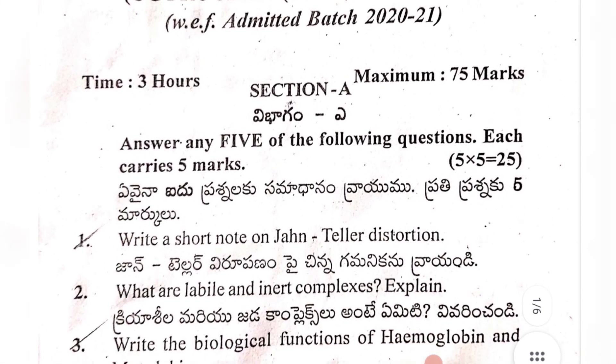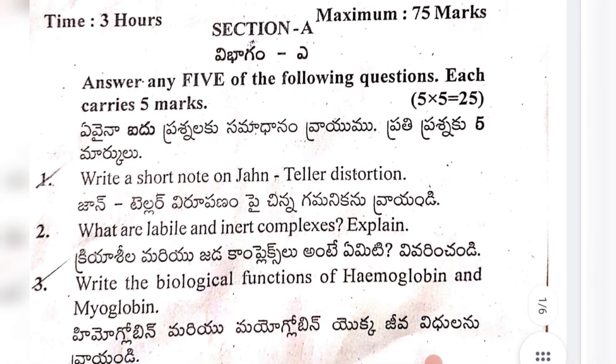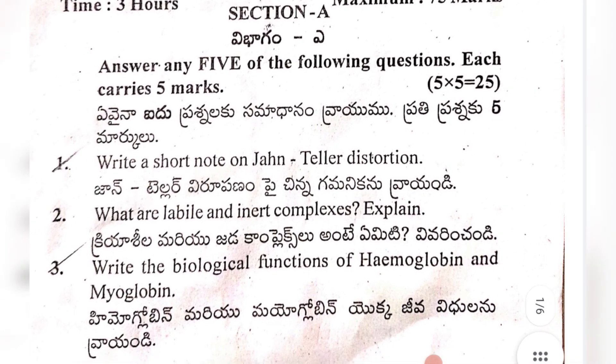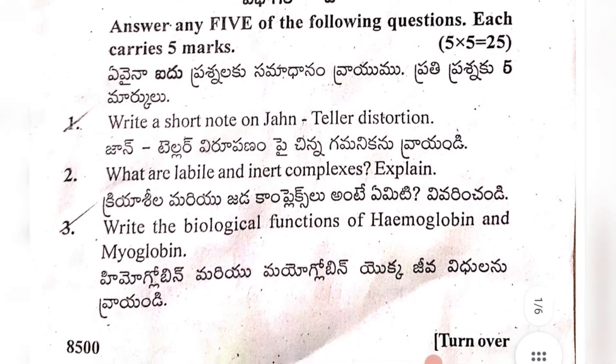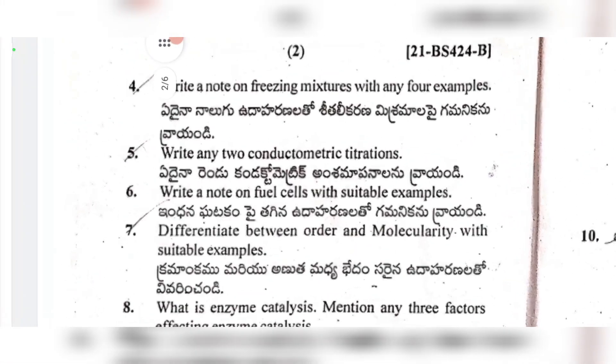The first important question is a short note on Jahn-Teller distortion. Second, what are labile and inert complexes? Third, explain the biological function of hemoglobin and myoglobin.